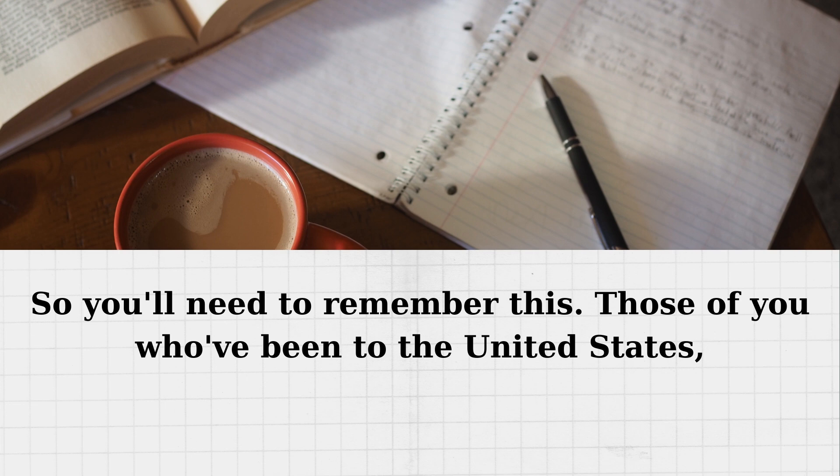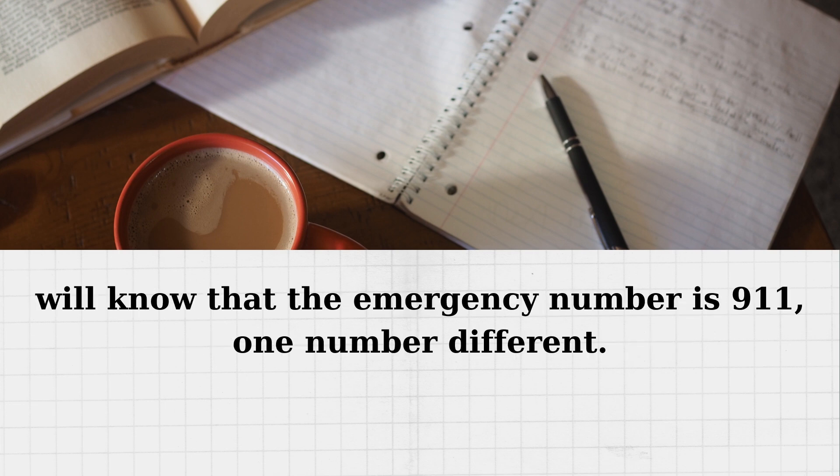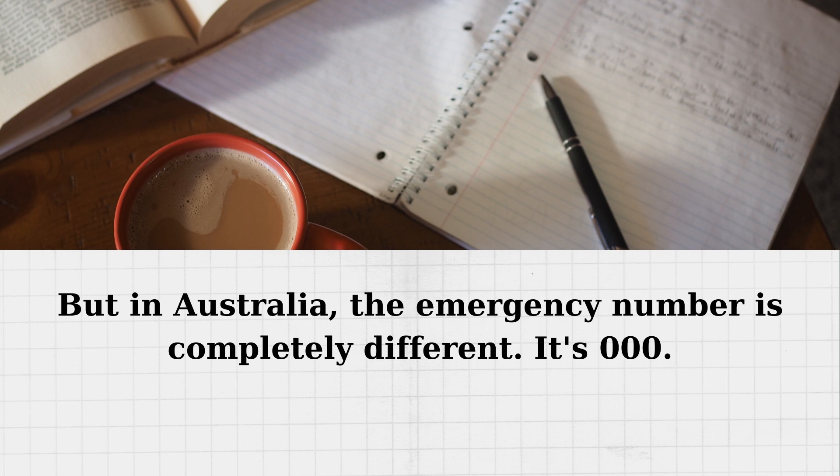Those of you who've been to the United States will know that the emergency number is 9-1-1, slightly different. But in Australia, the emergency number is completely different. It's 0-0-0.